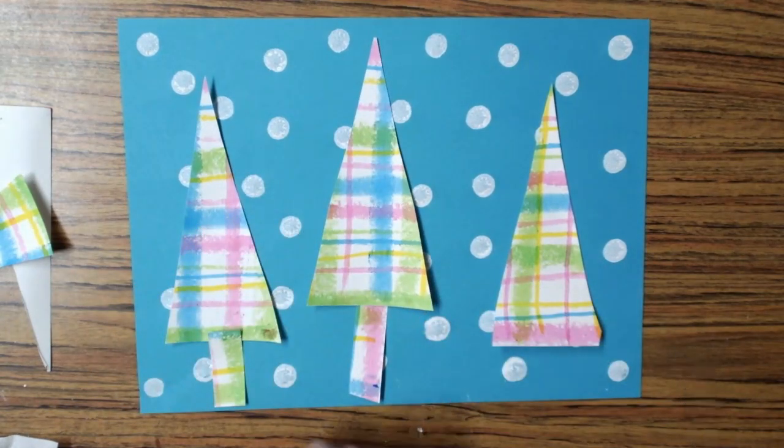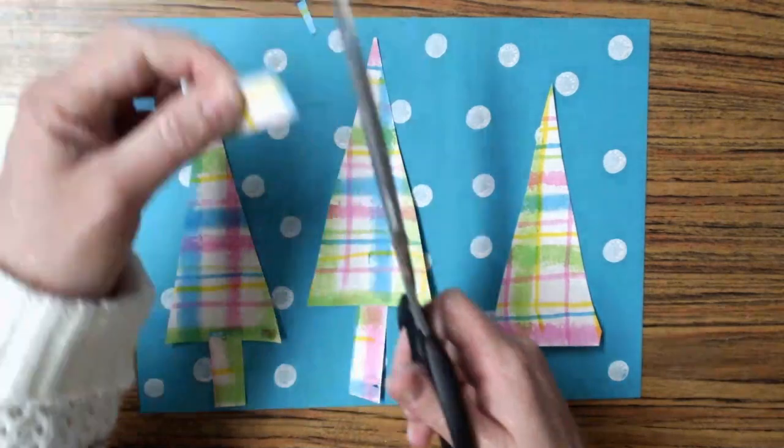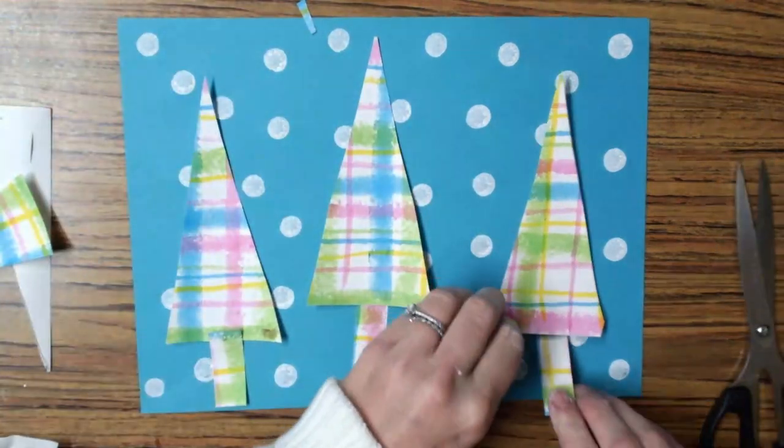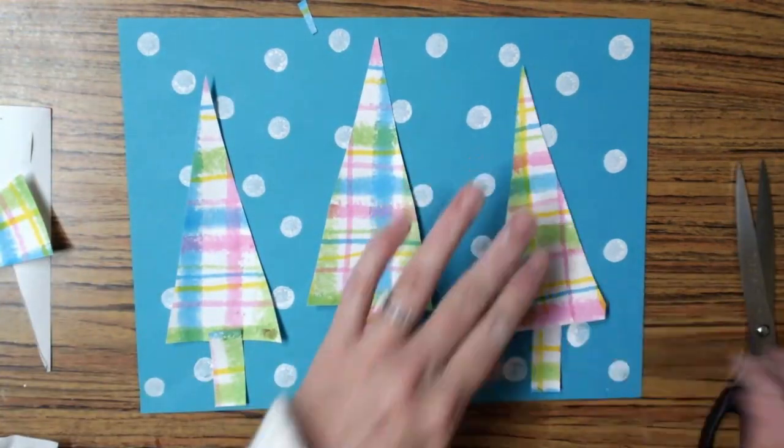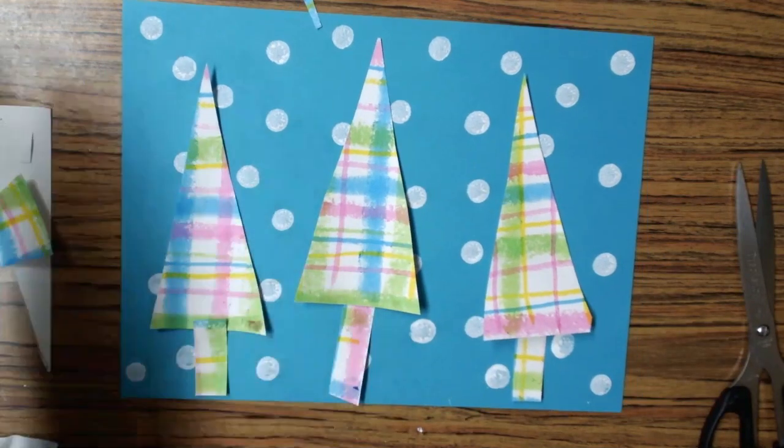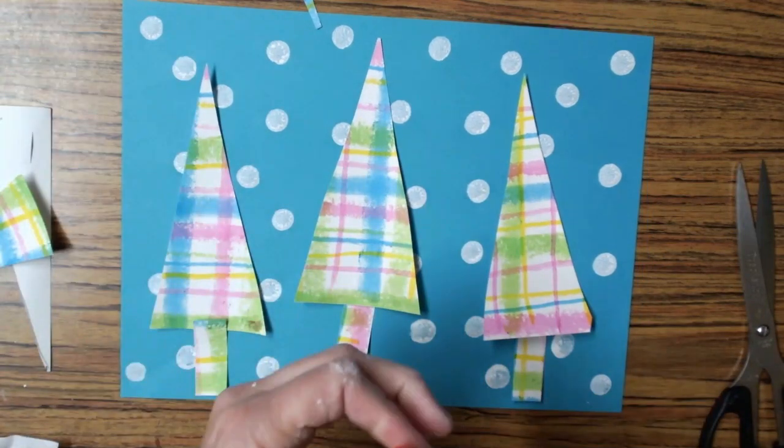Then I will glue my next tree trunk down, and then I will glue my tree on top of it. The last step will be to glue the last tree trunk down, and then glue my last tree on top of it.